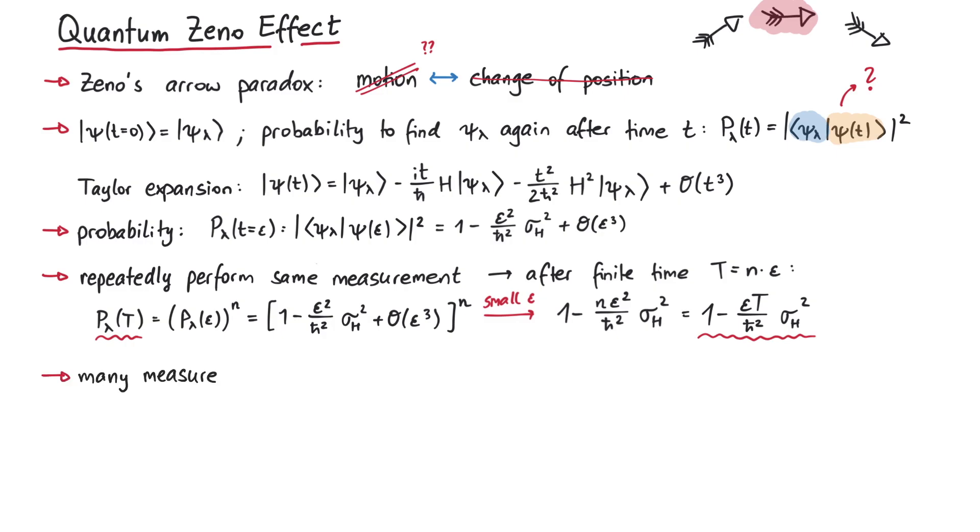If we perform more and more measurements in the same time t, which corresponds to letting n go to infinity and epsilon go to 0, while keeping t constant, this probability is equal to 1.